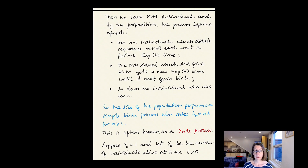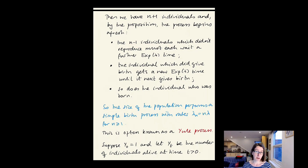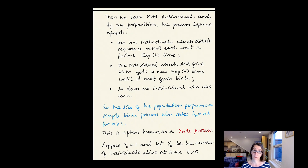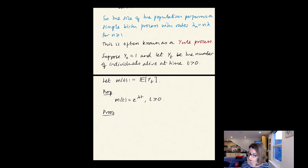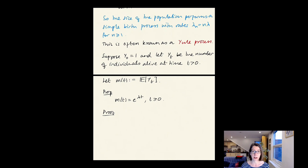After the first birth we have n+1 individuals, and by the competing exponentials proposition the process begins over. The n-1 individuals who didn't reproduce each wait a further exponential lambda time; the individual which gave birth gets a new exponential lambda time until its next birth; and the newborn gets a fresh exponential lambda until its first birth. So the population size performs a simple birth process with rates lambda_n = n*lambda. This is known as the Yule process.